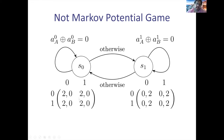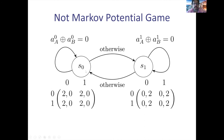The game at state zero is a potential game and the game at state one is a potential game. However, this is not a Markov potential game. The reason is that the transitions create a competing environment — essentially this game can be reduced to a zero-sum game. Formally, to show it's not a Markov potential game, any Nash policy must be non-deterministic: no deterministic Nash policy exists, as at both states players must randomize.